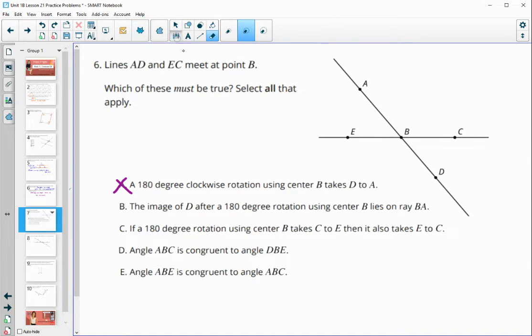The image of D after a 180 degree rotation using B will land on ray BA. So will D land somewhere on this ray? That is certainly true. D is going to rotate to the other side of B on that line. So it's going to be somewhere along this orange ray for sure.